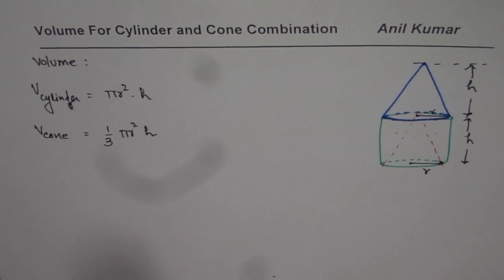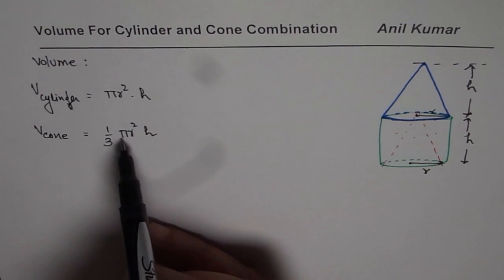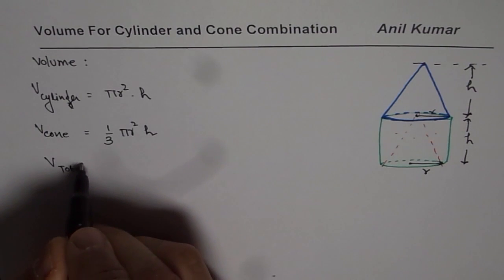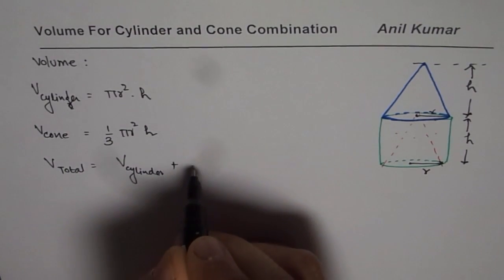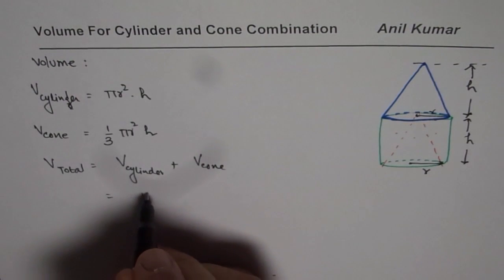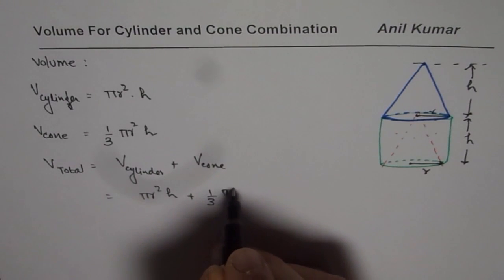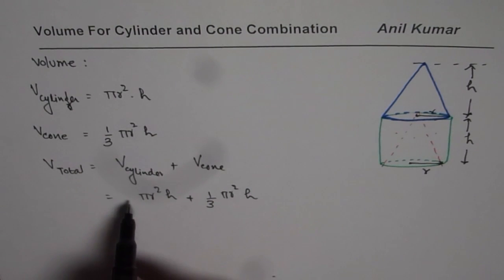So the combination will be what? Find the volume of a cylinder and then add one third of it. So we say volume total will be volume of cylinder plus volume of cone. So in this case it is pi r square h plus one third of pi r square h. Just add them up.